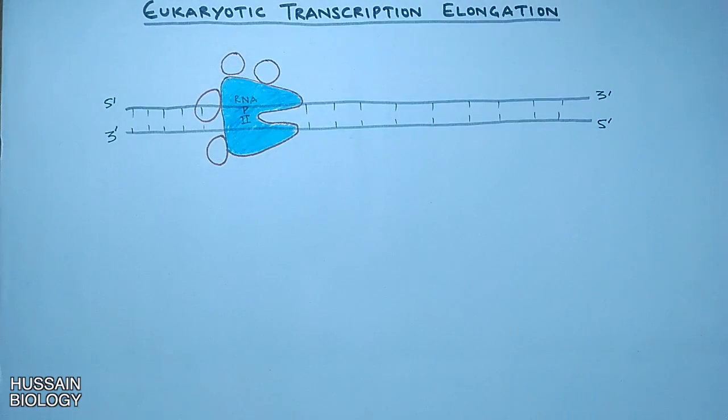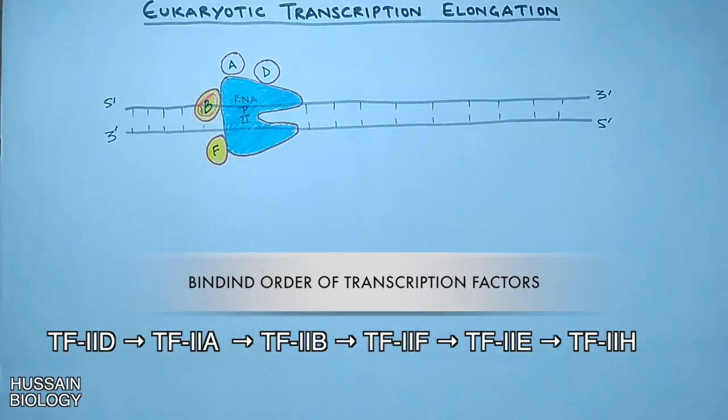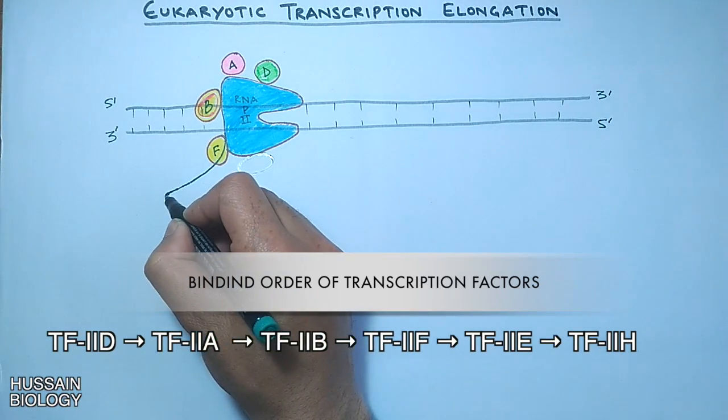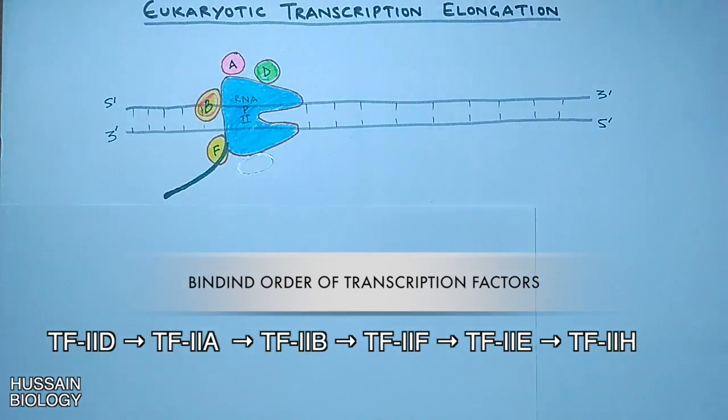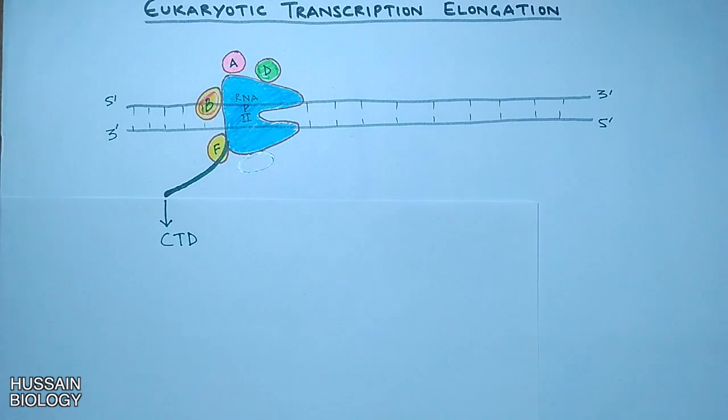Initially it has bound factor D, factor A, factor B, and factor F transcription factors. And here we can see the RNA polymerase 2 has another subunit by the name of CTD, that's carboxy terminal domain.